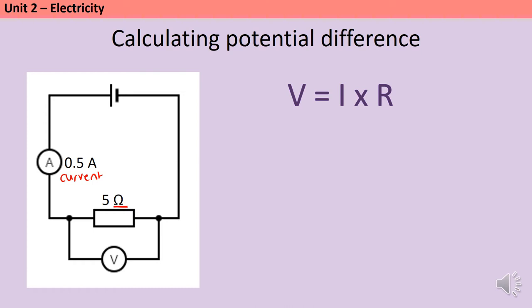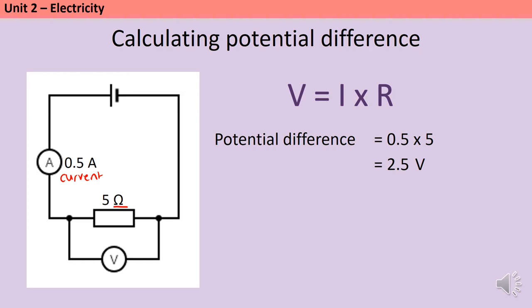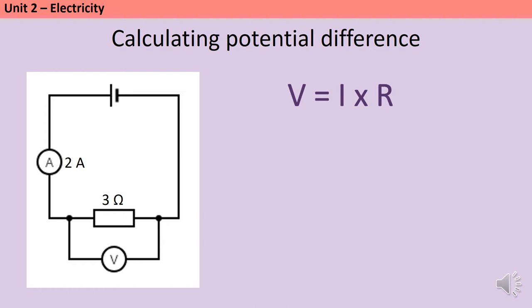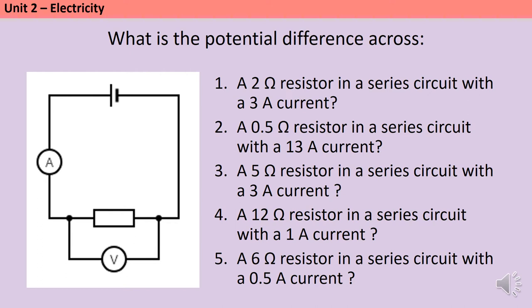Then I can substitute in the numbers in the right places. So the potential difference across this resistor is going to be 0.5 multiplied by 5, which gives me an answer of 2.5 volts. Here's a different circuit and this time the current flowing is 2 amps and the resistance is 3 ohms, which gives me a total potential difference of 6 volts.